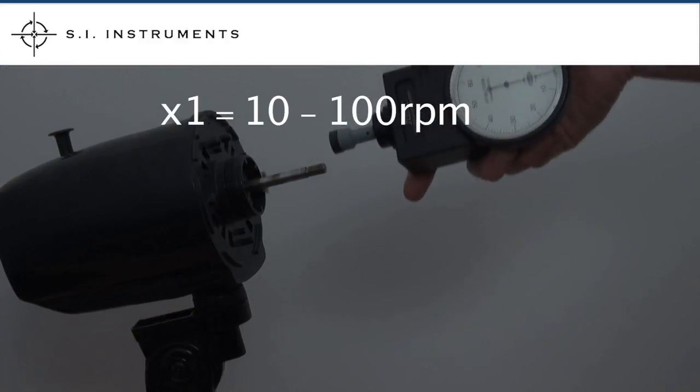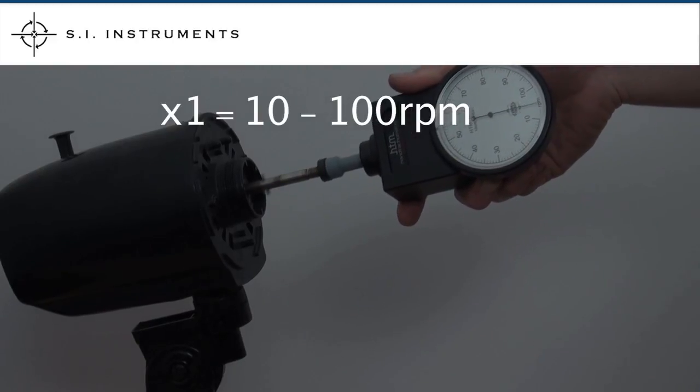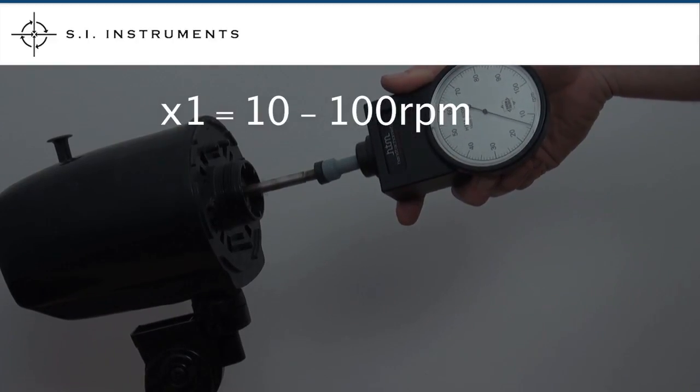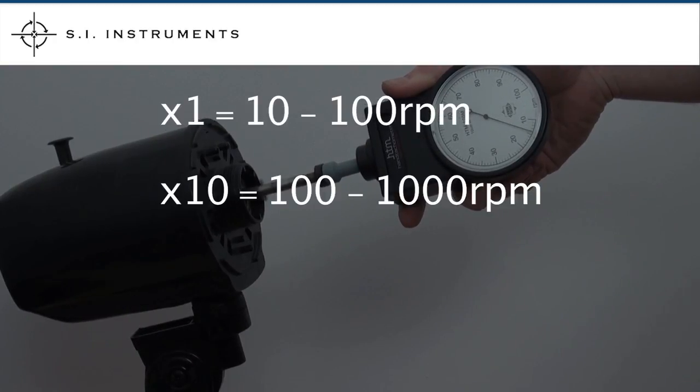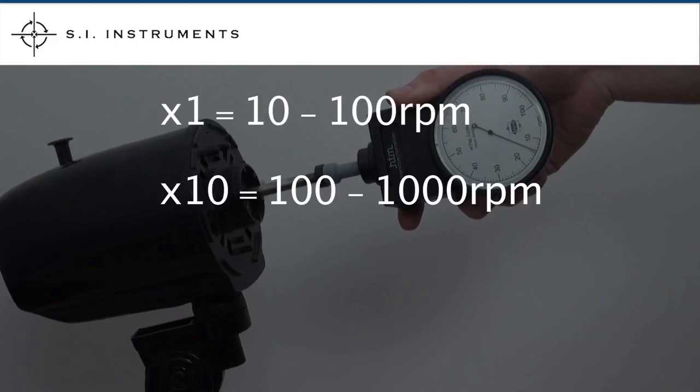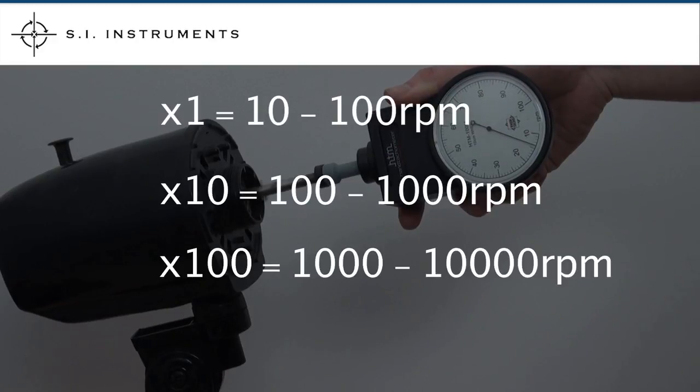When measuring RPM, the multiplier works like this: times 1 equals 10 to 100 RPM, times 10 equals 100 to 1000 RPM, times 100 equals 1000 to 10,000 RPM.